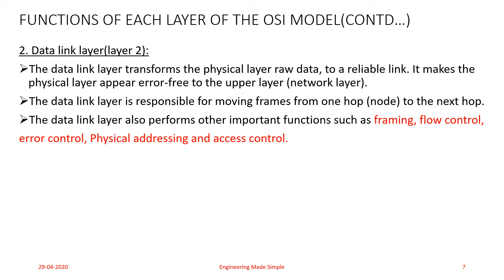The Data Link layer transforms the Physical layer's raw data to a reliable link — meaning a link which consists of data frames that are free from any errors. The Data Link layer adds reliability to the Physical layer by adding mechanisms to detect and retransmit damaged or lost frames. It also uses mechanisms to recognize duplicate frames. Error control is normally achieved through a trailer attached at the end of the frame.